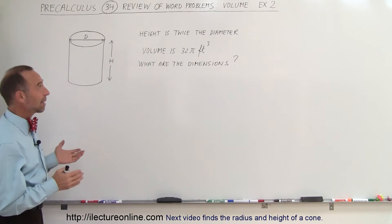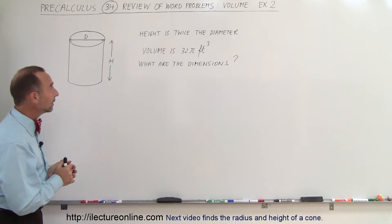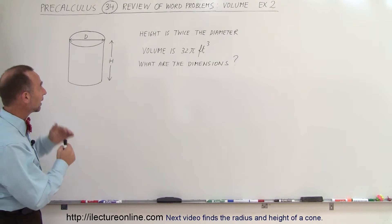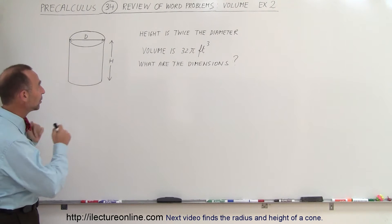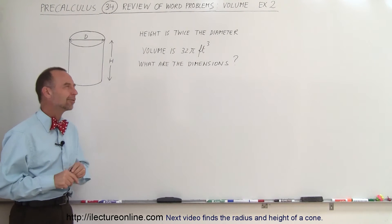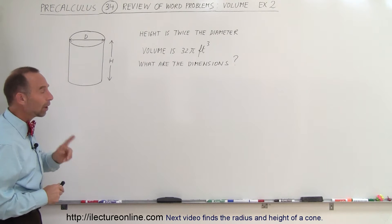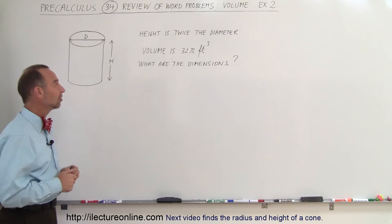Welcome to ElectronLine and our next example is dealing with a cylinder, dealing with the volume of the cylinder. The instructions here are that the height of the cylinder is twice the diameter and the volume is 32π cubic feet. I know that's an odd volume but it makes the numbers come out better. They're asking what are the dimensions of this cylinder.